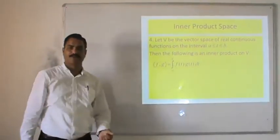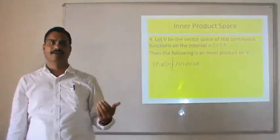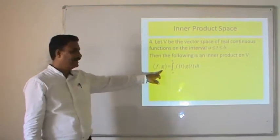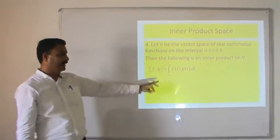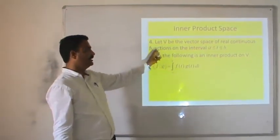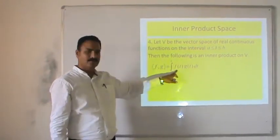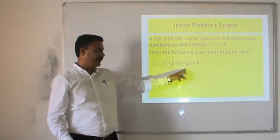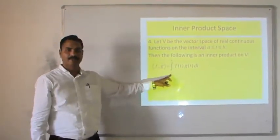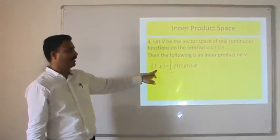The fourth case: let V be a vector space of real continuous functions on the interval a ≤ t ≤ b. The inner product of f and g, where f and g are real continuous functions of t, is defined as ⟨f, g⟩ = ∫ₐᵇ f(t)·g(t) dt. We integrate the product of the two functions with respect to t over [a, b], and the resulting quantity is a scalar belonging to our field.